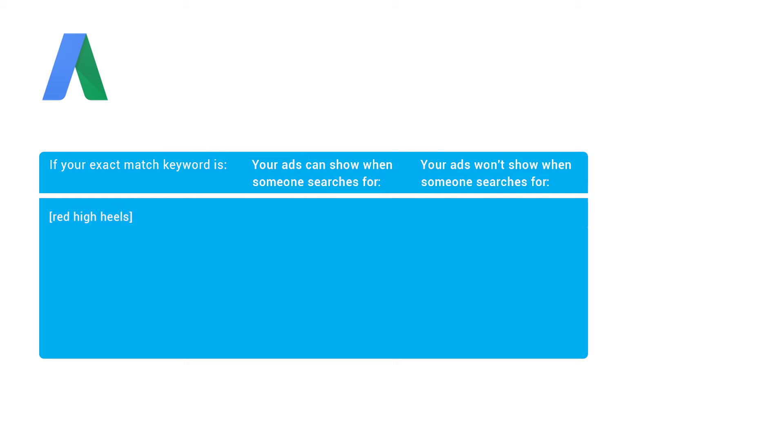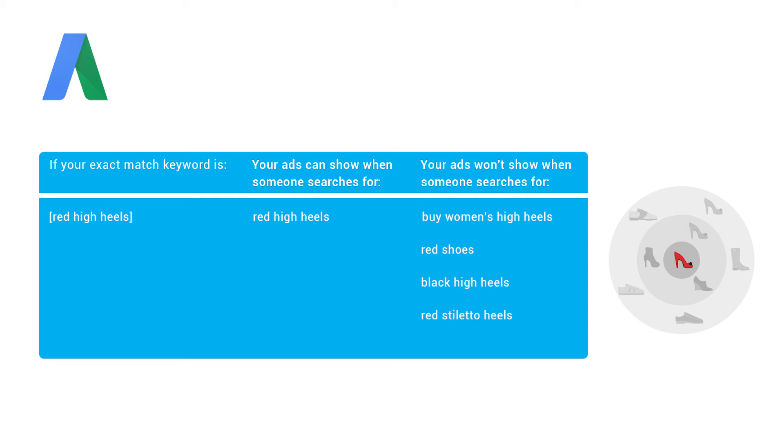For example, if your exact match keyword is 'red high heels,' your ad can show on searches for 'red high heels,' but it won't show for related searches like 'buy women's high heels' or 'red shoes.' Keep in mind that exact match is also the most restrictive keyword match type. If you use only exact match keywords in your ad group, your ads could be limited in how often they show to customers.